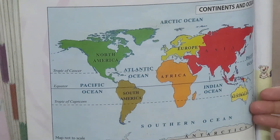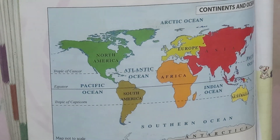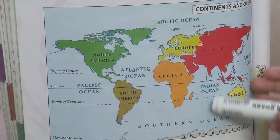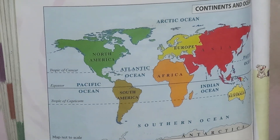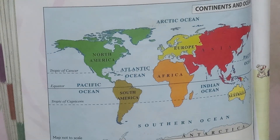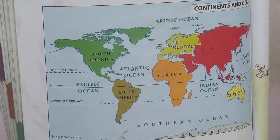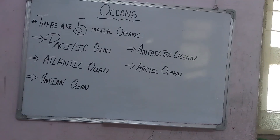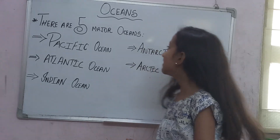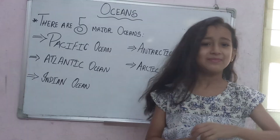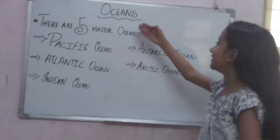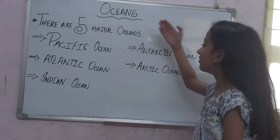Australia is the smallest continent and it is surrounded by water on all sides, so it is also known as an island. Let's go to the next topic.